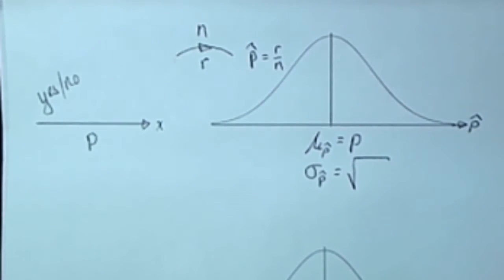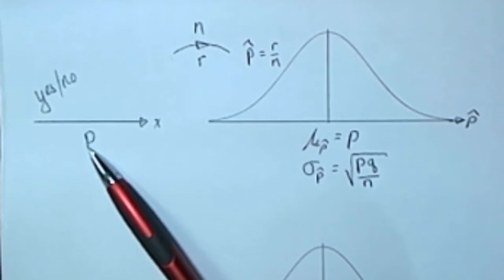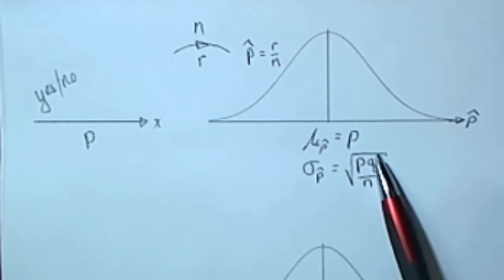The standard deviation will be equal to the square root of P, the original proportion in this population times Q. P is the probability of success if you picked one at random.